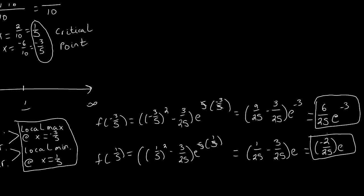We've looked at another example of using the derivative of our function to tell us different attributes of the original function and its graph, so we don't have to graph by point-plotting. In the next video, we'll take this a step further, looking at points of inflection and concavity based on the second derivative rather than just the first derivative.